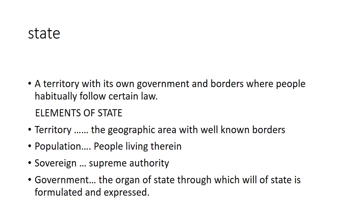The next element is government. Government is the organ of state through which the will of state is formulated and expressed. The government is an agency or organ of state that exercises authority on behalf of the sovereign. These are the basic elements of state: territory, population, sovereign, and government. If you remove any one of these elements, the state loses its character and you cannot call that organization a state.